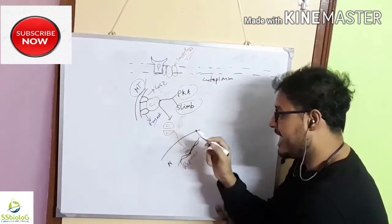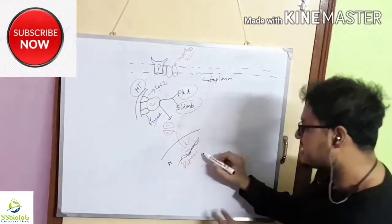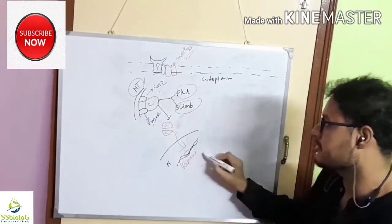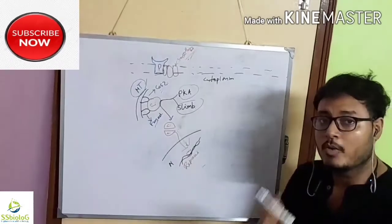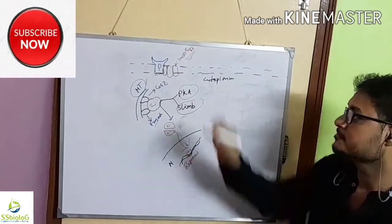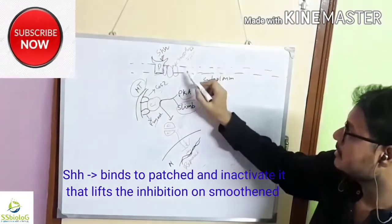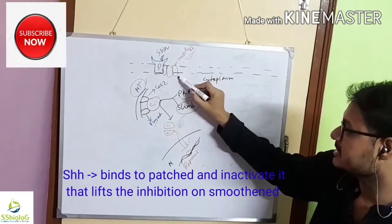And this fragmented CI protein enters the nucleus and acts as a transcription repressor and represses the transcription. Now what happens when sonic hedgehog comes? When sonic hedgehog comes and binds with the receptor, the smoothened protein becomes activated.